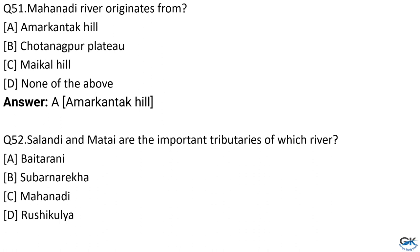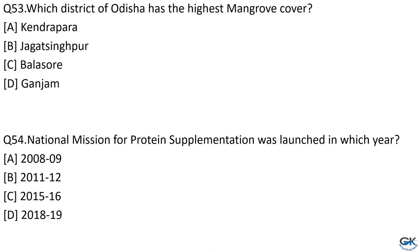Question No. 52: Salandi and Morthai are important tributaries of which river? Option A: Vaitarani. Option B: Subarnarekha. Option C: Mahanadi. Option D: Rushikulya. The answer is Option A, Vaitarani. Question No. 53: Which district of Odisha has the highest mangrove cover? Option A: Kendrapada. Option B: Jagatsinghpur. Option C: Balasore. Option D: Ganjam. The answer is Option A, Kendrapada.